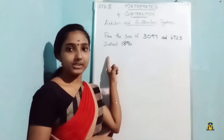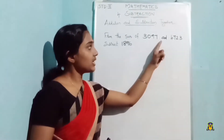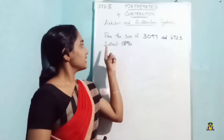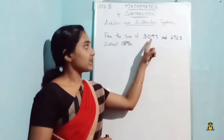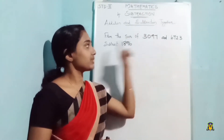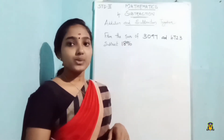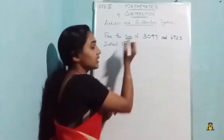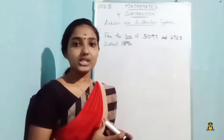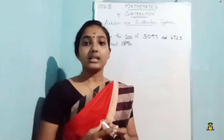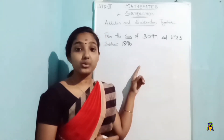The first question is: from the sum of 3097 and 4723, subtract 1896. Here you can see the word 'sum.' Have we heard this word before? It is the answer that we get in addition — the answer we get in addition is called the sum.